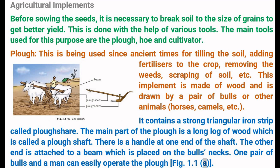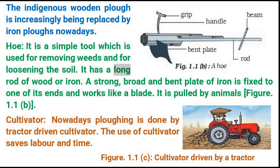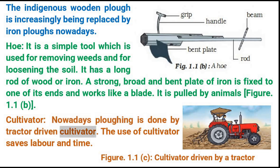The indigenous wooden plow is increasingly being replaced by iron plows nowadays. Hoe: It is a simple tool used for removing weeds and for loosening the soil. It has a long rod of wood or iron, and a strong, broad and bent plate of iron fixed to one end that works like a blade. It is pulled by animals. Cultivator: Nowadays plowing is done by a tractor-driven cultivator. The use of a cultivator saves labor and time.